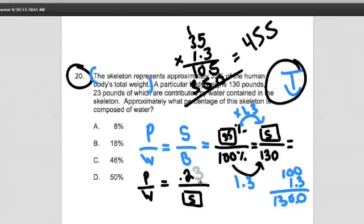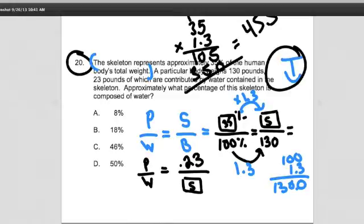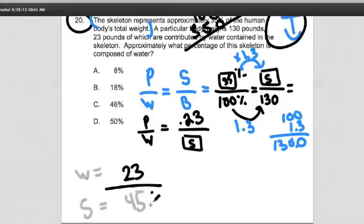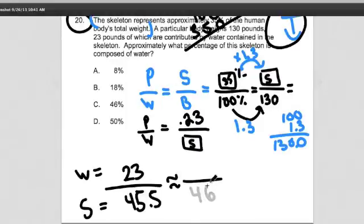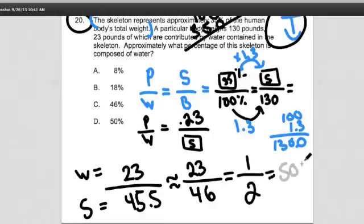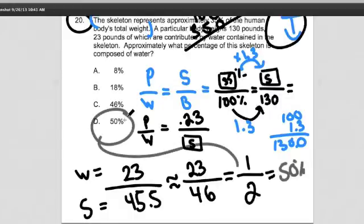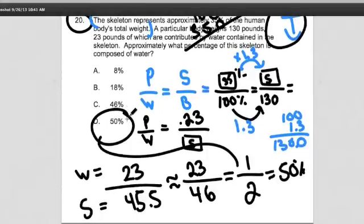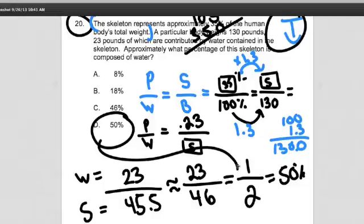Now when I compare, I'm really doing 23, which is the weight of the water - remember that's my water - but now my skeleton, which I figured out was 45.5. I think it's fair to at this point approximate. This 45.5 is approximately 46 over 23, which is exactly reduced to one half, which is equal to fifty percent.